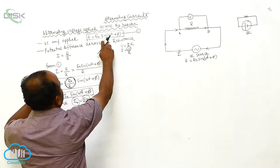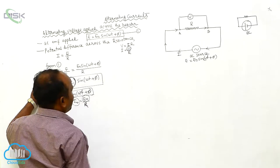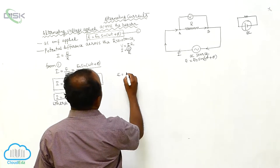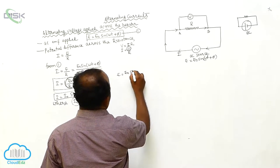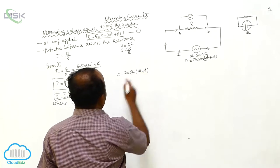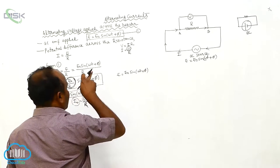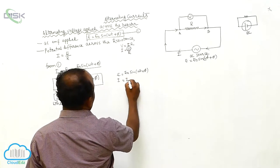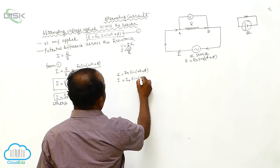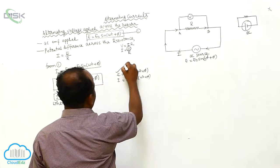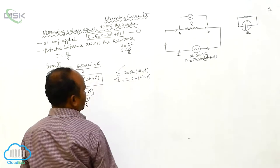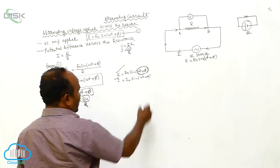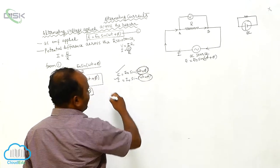The final expressions are: E is equal to E₀ sin(ωt + π), and I is equal to I₀ sin(ωt + π). By observing these two equations, the phase of the EMF is (ωt + π) and the phase of the current is also (ωt + π).